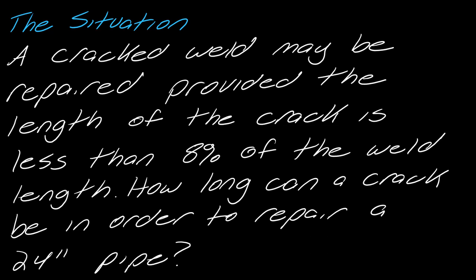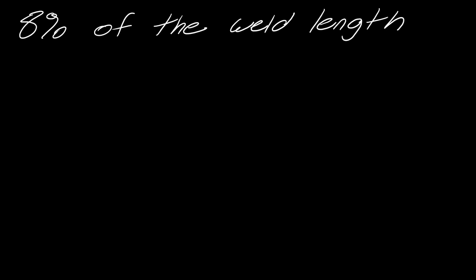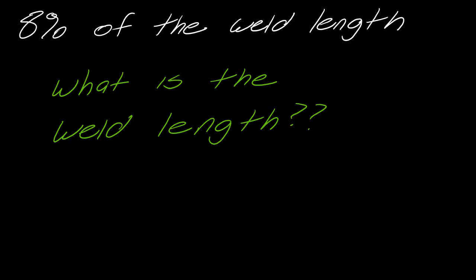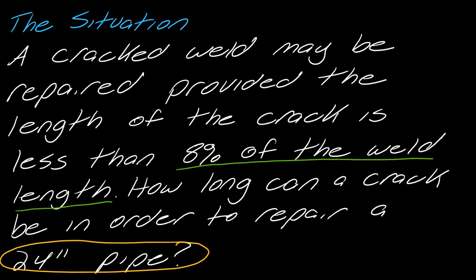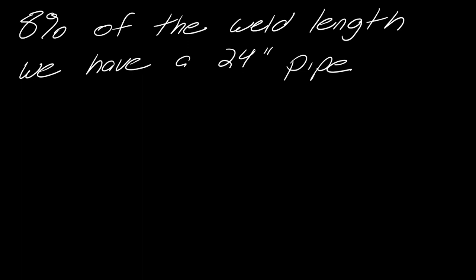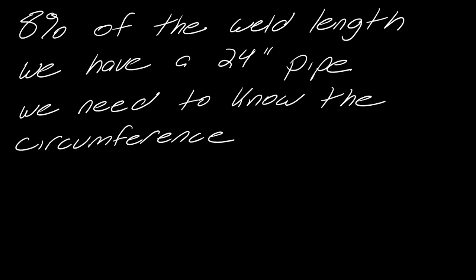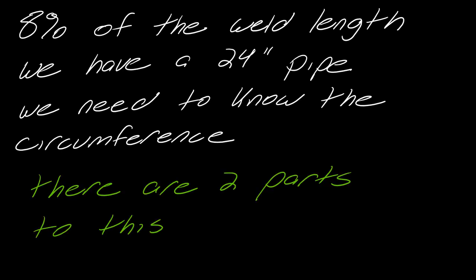What is the point of this problem? It's to find 8% of the weld length. I like making a plan and writing notes. I need to know 8% of the weld length — so what is the weld length? Rereading the problem: it's a 24-inch pipe, which gives us the diameter but not directly the weld length, so we need the circumference. There are two parts: find the circumference, then find 8% of the weld length.